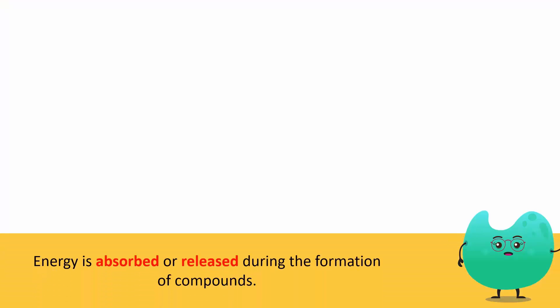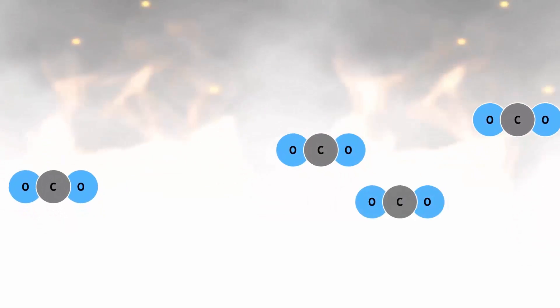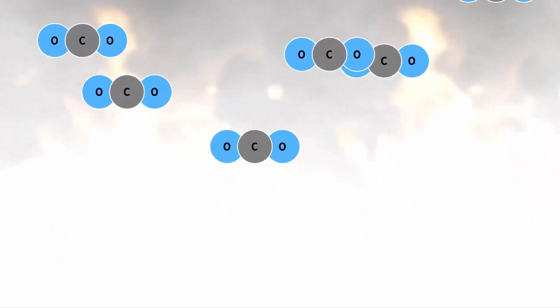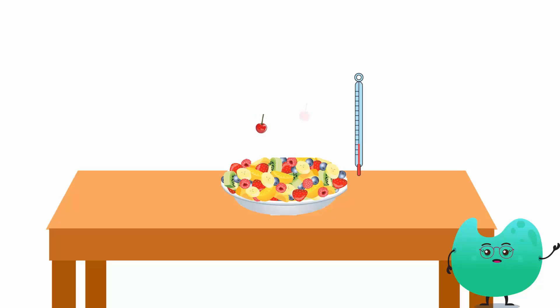Usually when a compound is formed, energy is absorbed or released. For example, during the burning of fuel, a new compound carbon dioxide is formed. But when we are mixing fruits to make a fruit salad, we don't feel any heat nor is there any change in temperature as energy is not being absorbed or released.